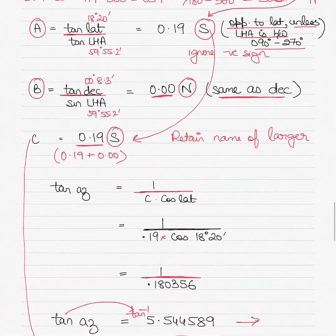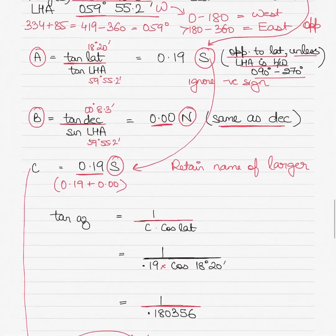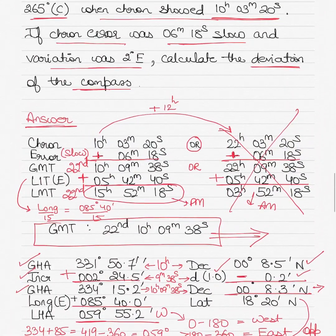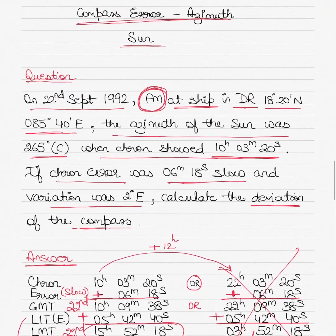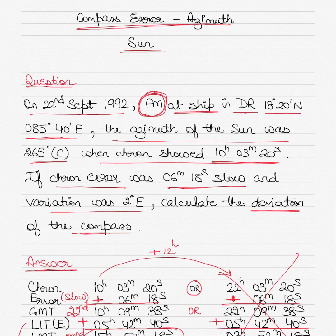Try to use the concept to solve the question. I hope this was a good exercise to understand how to calculate compass error using the Sun as a celestial body. Let me know what you thought about this video. My next video will show you the calculation of amplitude of the Sun. See you guys!